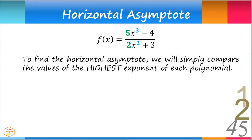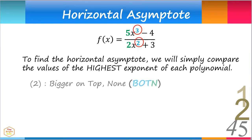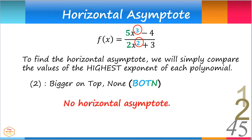In the numerator, the highest exponent is 3, and in the denominator, it is 2. Notice that the exponents are bigger on top. This means there is no horizontal asymptote.